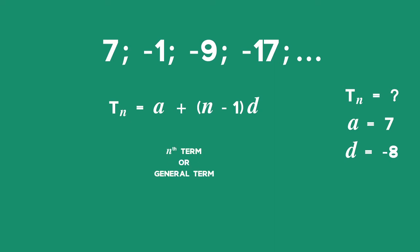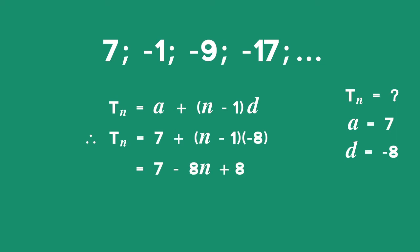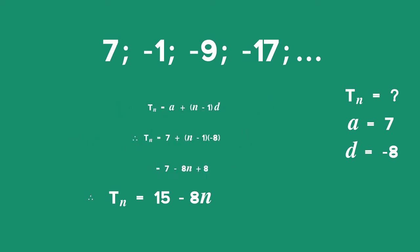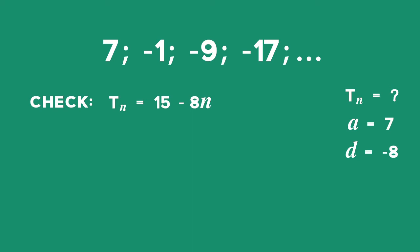To generate the nth term formula, we substitute the values for A and D into the general formula. Therefore TN is equal to 7 plus (N minus 1) multiplied by negative 8, which equals 7 minus 8N plus 8 after multiplying out. Therefore the nth term of this sequence is TN is equal to 15 minus 8N. We can verify our general term by checking one of the terms. The fourth term has a value of negative 17. Using the formula, term 4 equals 15 minus 8 times 4, which equals negative 17, confirming our nth term formula is correct.